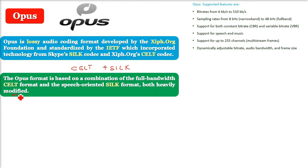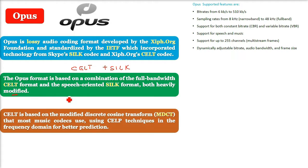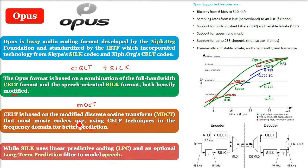CELT is based on MDCT — modified discrete cosine transform — that most music codecs use, applying CELP techniques in the frequency domain for better prediction. On the other hand, SILK uses linear predictive coding (LPC) and an optional long-term prediction filter to model speech.